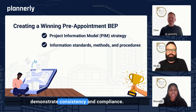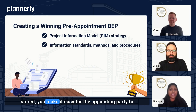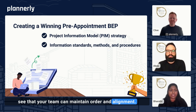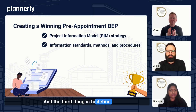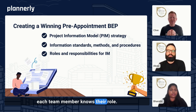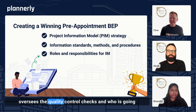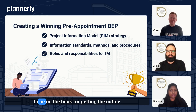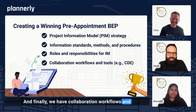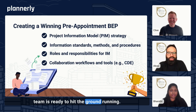This is where you demonstrate consistency and compliance. By clearly defining how files will be named, shared, and stored, you make it easy for the appointing party to see that your team can maintain order and alignment. The third thing is to define roles and responsibilities for information management — for example, who's responsible for coordinating data delivery, and who oversees the quality control checks. Finally, we have collaboration workflows and tools like the common data environment. Defining these upfront shows the appointing party that your team is ready to hit the ground running.